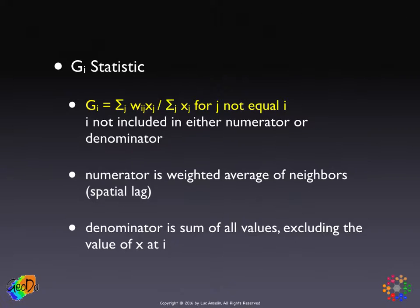Recall that the local Moran's I is a product of Z at I with the spatial lag. The GI statistic has no product — it's simply the spatial lag part. So the numerator is the spatial lag, the weighted average of the neighbors, and the denominator is the sum of all values except the value at I.